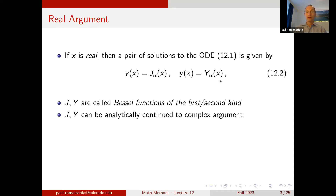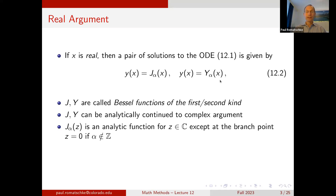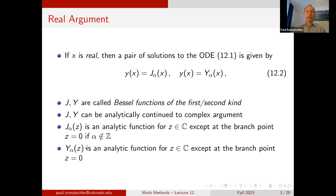These functions are originally defined for real-valued x but they can be analytically continued to complex argument. In particular, J_α(z) is an analytic function in the complex plane except for a branch point at z = 0 if α is not an integer. For example, J_3 has no branch points, but J_{√2} would have a branch point at z = 0. By contrast, Y_α(z) is analytic except for a branch point at z = 0 regardless of whether α is integer or not.